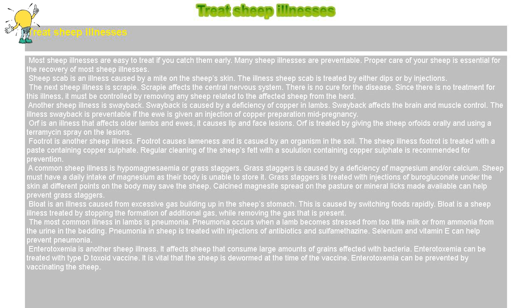The most common illness in lambs is pneumonia. Pneumonia occurs when a lamb becomes stressed from too little milk or from ammonia from the urine in the bedding. Pneumonia in sheep is treated with injections of antibiotics and sulfomethazine. Selenium and vitamin E can help prevent pneumonia.